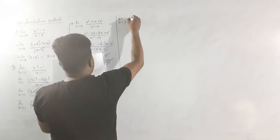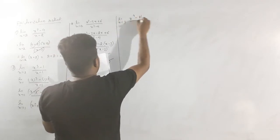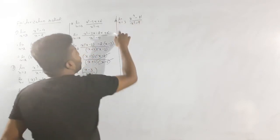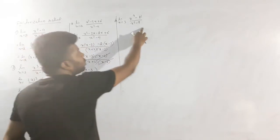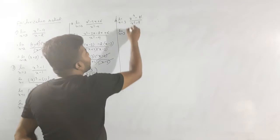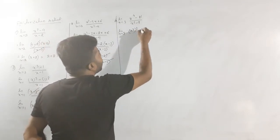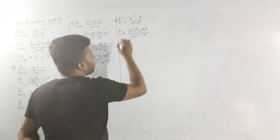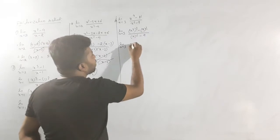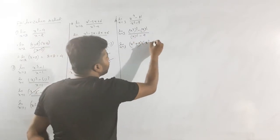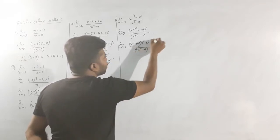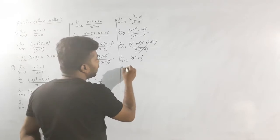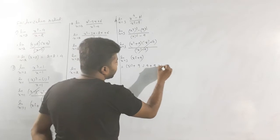Next question: limit x tends to 3, x to the power 4 minus 81, divided by x squared minus 9. Direct substitution gives 9 minus 9 equals 0. Factorize: x⁴ minus 81 as (x² minus 9)(x² plus 9), cancel (x² minus 9), so the limit becomes x tends to 3 of (x² plus 9). Substituting: 3 squared plus 9 equals 9 plus 9 equals 18. Complete.